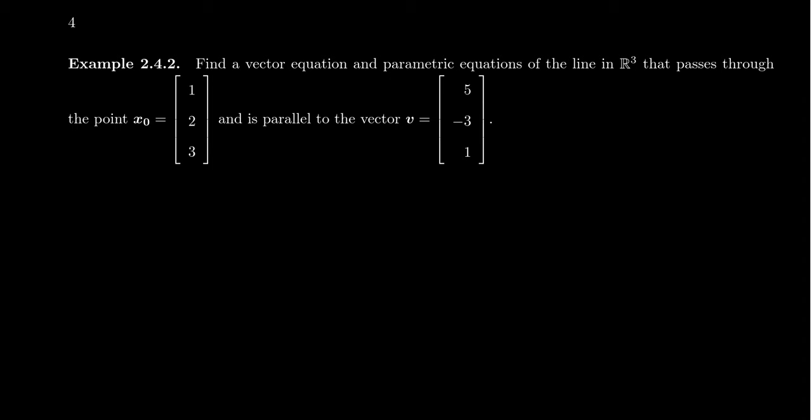For example, consider we have a line in R3 that contains the point (1, 2, 3), but it's parallel to the vector (5, -3, 1).